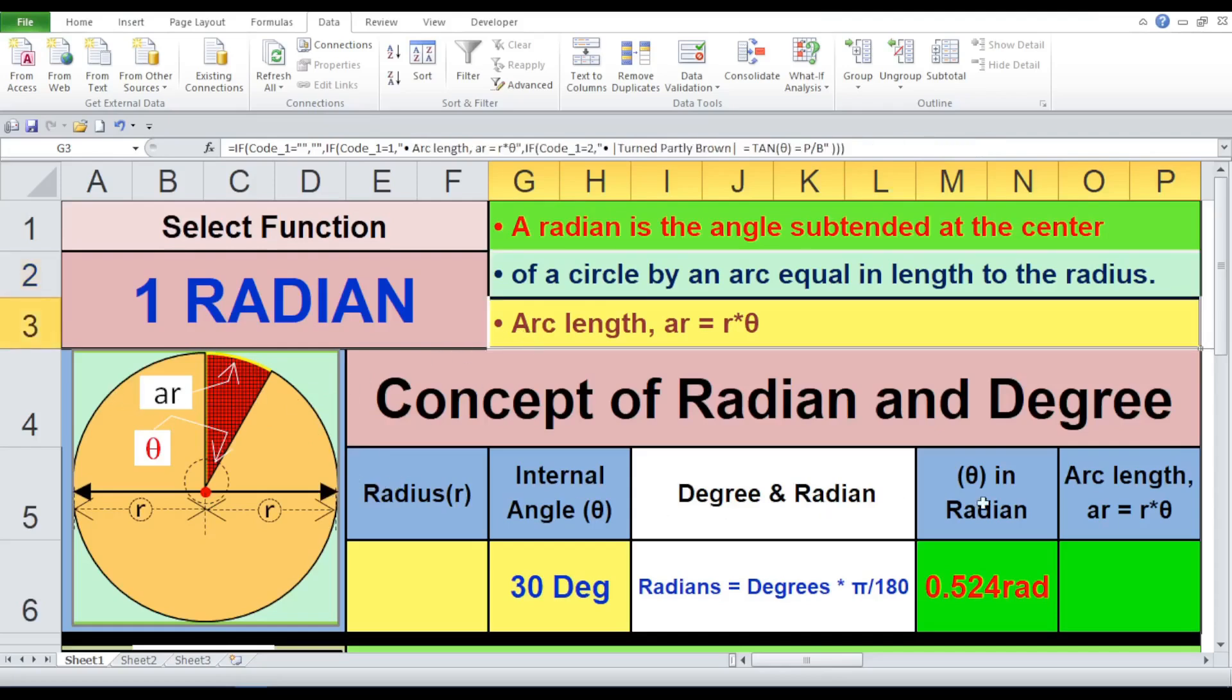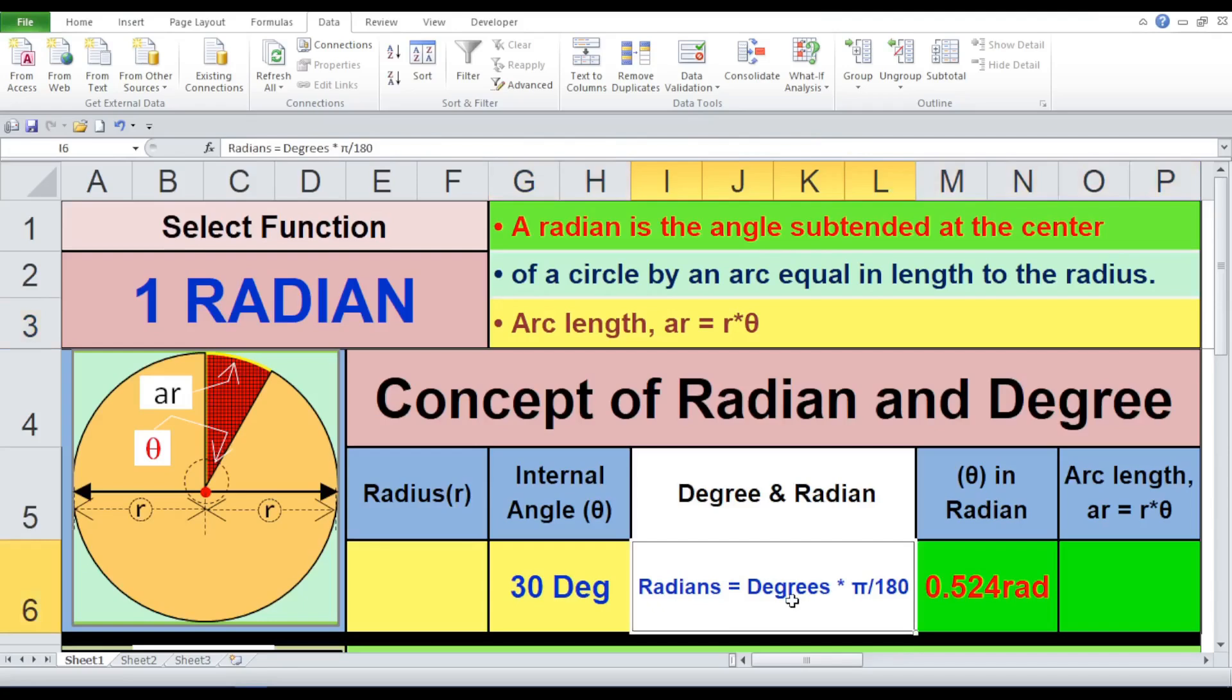However, remember, we're used to measuring angles in degrees. To use this formula, we need to convert degrees to radians. The conversion factor is radians equals degrees into pi by 180. Now, let's break down the table. Radius r: input the radius of the circle here, in any unit of length, example meters, centimeters.